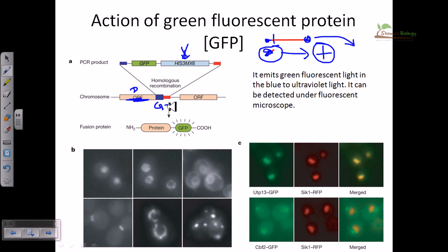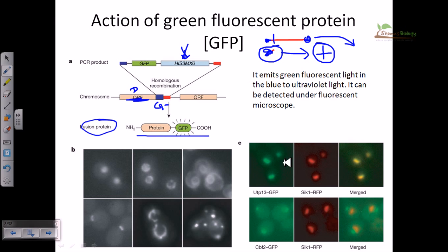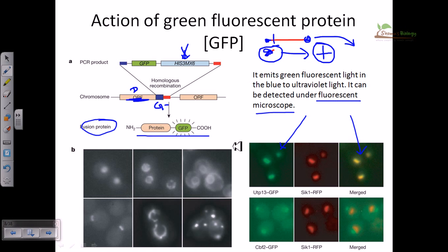After the attachment, expression is confirmed via fusion protein production. GFP (green fluorescent protein) is produced and its expression can be observed under UV light using a fluorescent microscope or detected with a fluorometer.